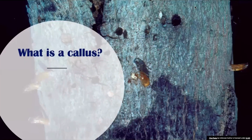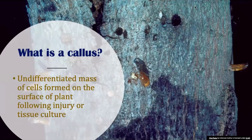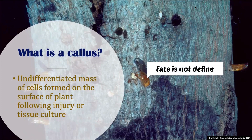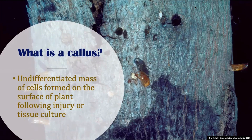So what is callus? A callus is an undifferentiated mass of cells which is formed on the surface of a plant injury. Undifferentiated mass means it is an aggregate of cells whose fate is not defined — meaning what exactly it is going to be, whether it is going to differentiate into a leaf, stem, or root is not defined yet. You can induce the callus to form any of the structures of the plant.